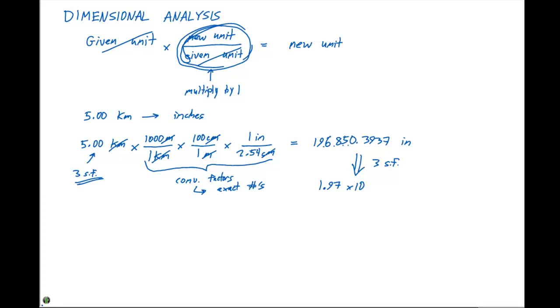This would be 1.97 times 10 to the fifth. So 5.00 kilometers equals 1.97 times 10 to the fifth inches.